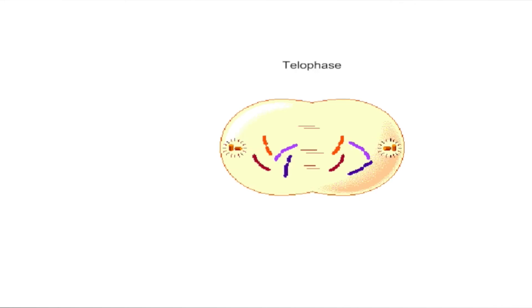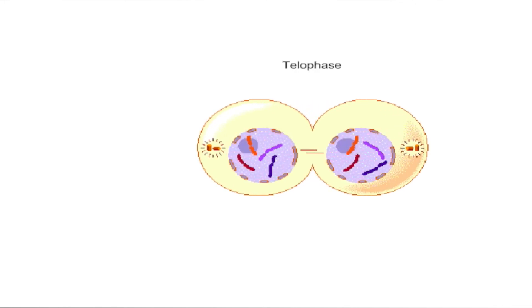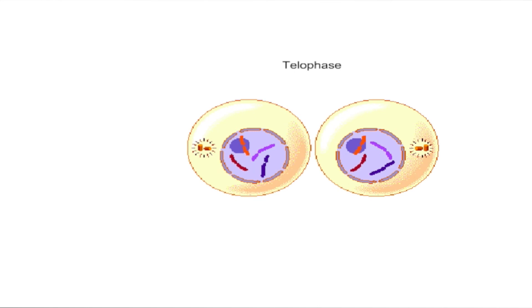The final stage is telophase. The chromosomes are now assembled at the opposite ends of the cell. The chromosomes begin to uncoil and become less visible. A nuclear envelope forms around each chromosome set and the spindle disappears. Within each nucleus, a nucleolus reappears. At this point, nuclear division is complete.